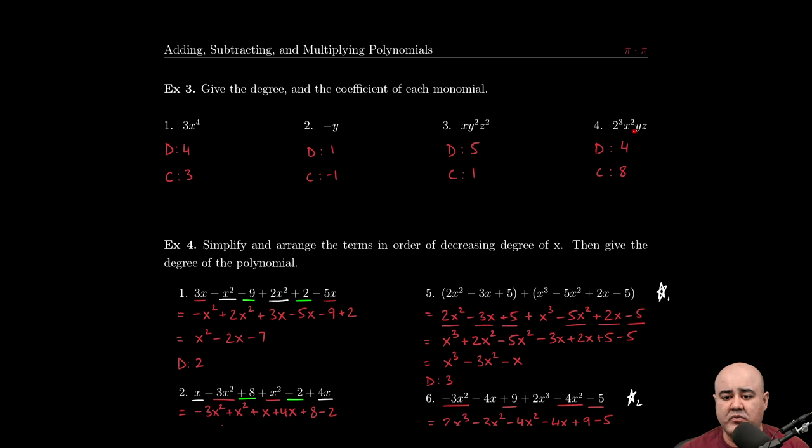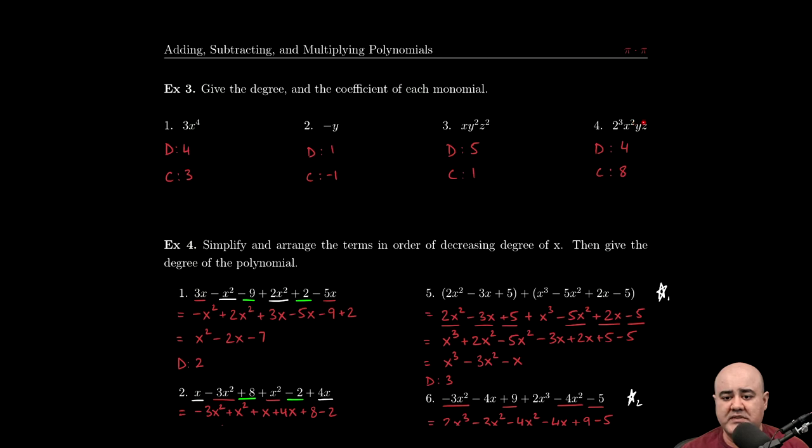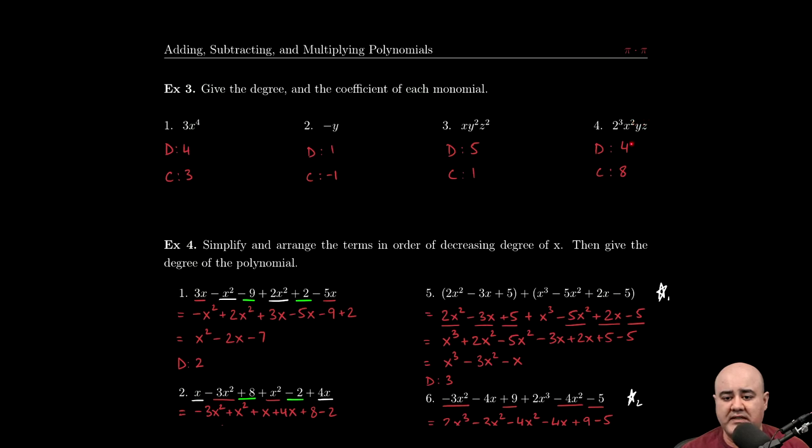The leading coefficient of the coefficient is 1 because that's being multiplied by the variables here. The last one here, we look at the variables. The degrees are 2, 1, and 1. So 2 plus 1 is 3, 3 plus 1 is 4. That's our degree. The coefficient is 8 because if we simplify 2 to the third, we get 8.